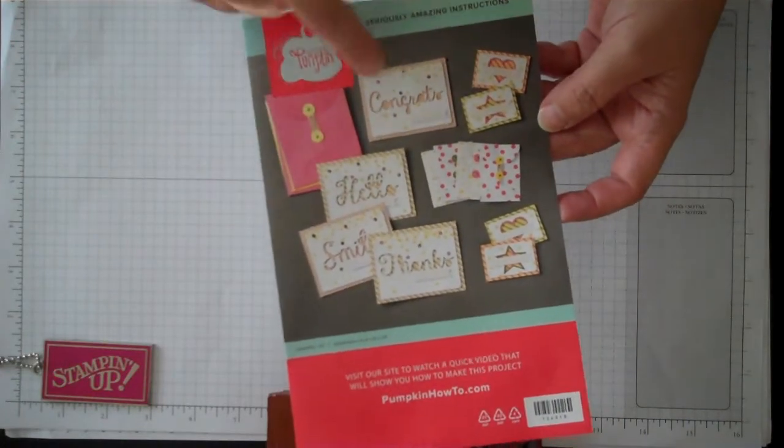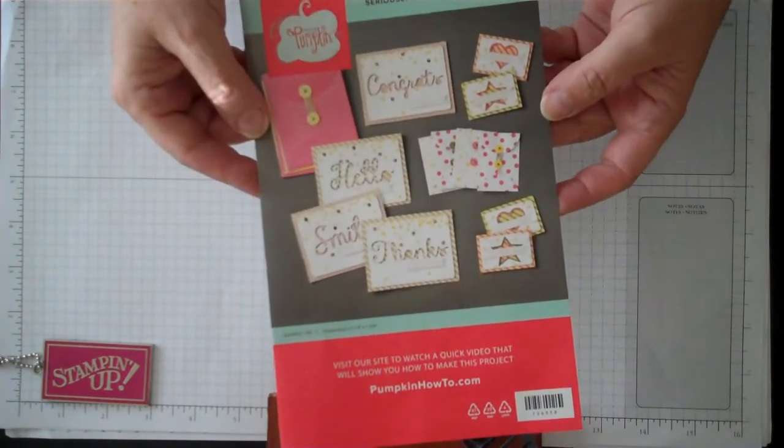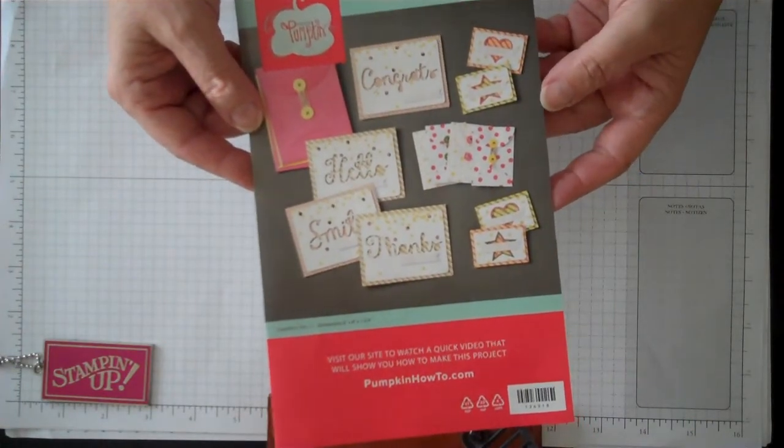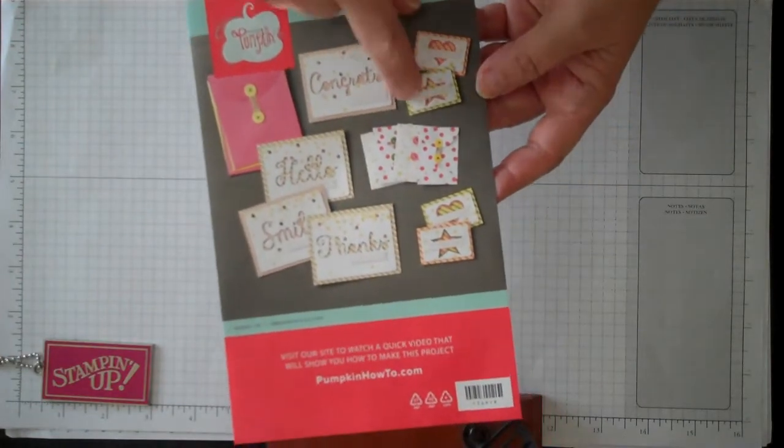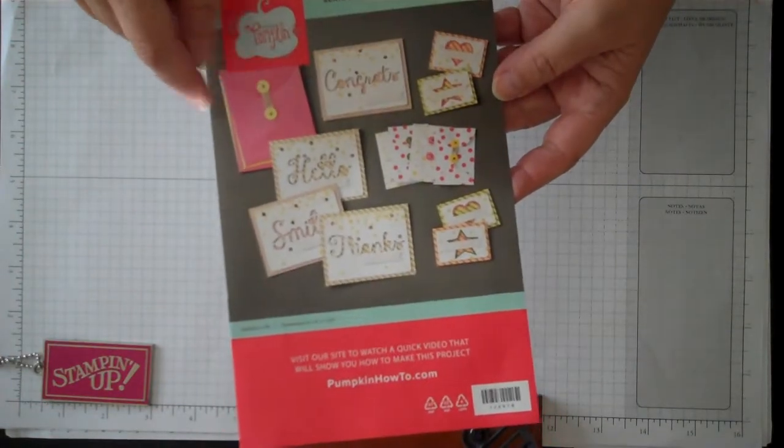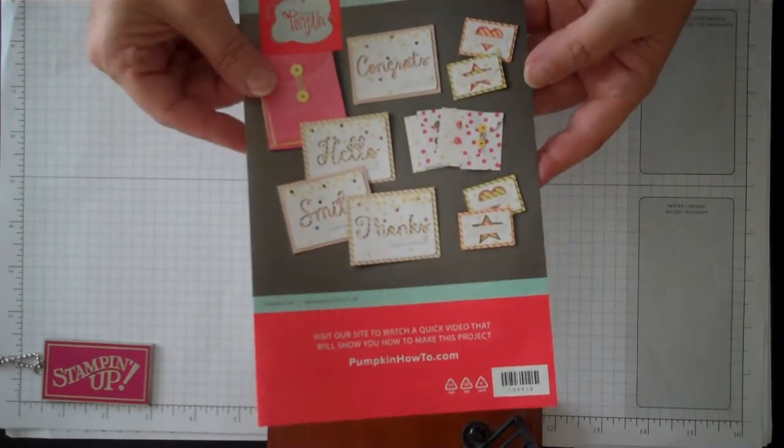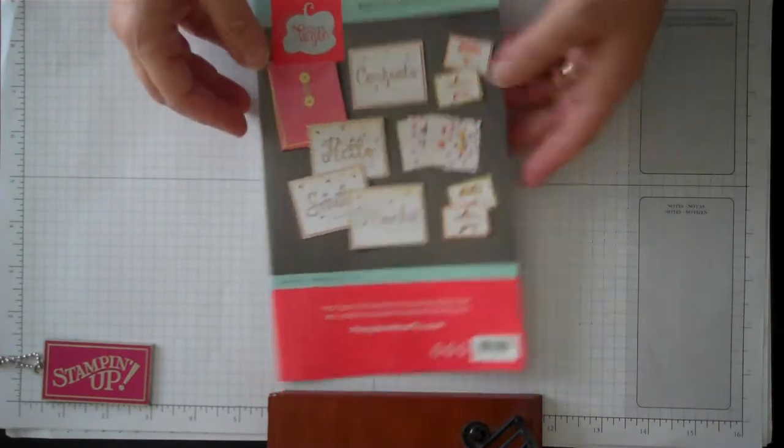This is actually what you can make out of it. You get four different cards, eight different sayings that are cut out—hello, smile, thanks, and congrats—and also four small little cards, four small envelopes, and four large pocket envelopes that are really cute. So I want to show you different ways that maybe you never thought of that you could use this.